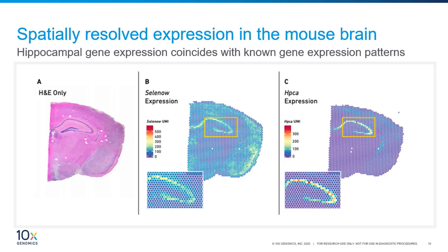Let us now move on to neuroscience. The brain is a very complex organ, but with fairly well characterized anatomy. Here we have three images: on the left is an H&E stain image from a mouse brain, and on the right-hand side are images from the Visium spatial gene expression solution for the same section. Here we highlight the unique molecular identifiers, or UMI molecules, for two known hippocampal genes, demonstrating that the Visium detection coincides with known expression patterns for these two genes.